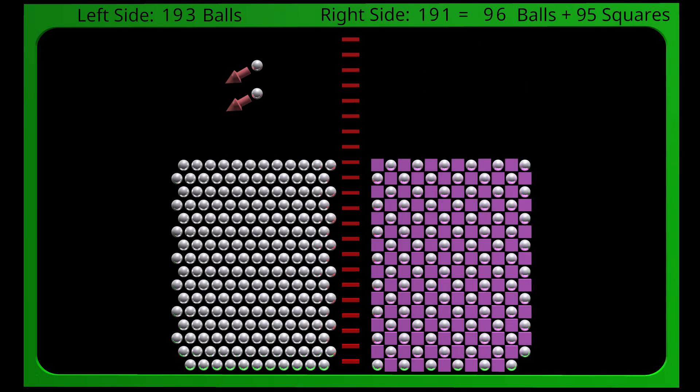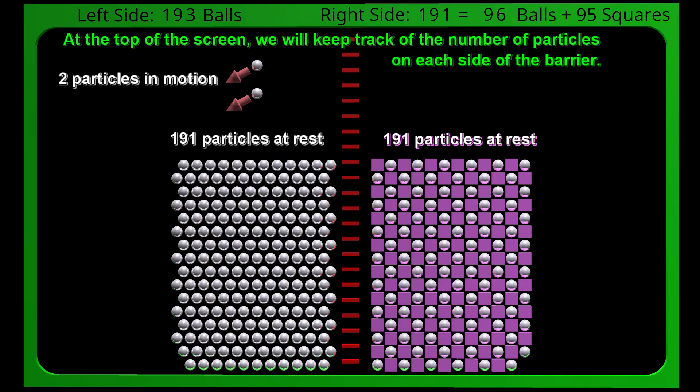Let's consider a situation with zero gravity. In the beginning, we have approximately the same number of total particles on both sides of the barrier. At the top of the screen, we will keep track of the number of particles on each side of the barrier.